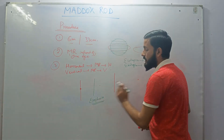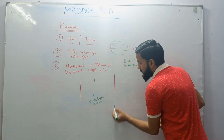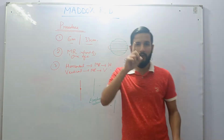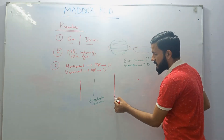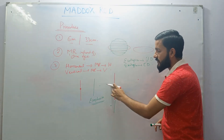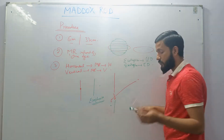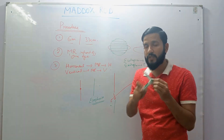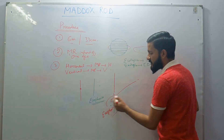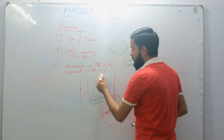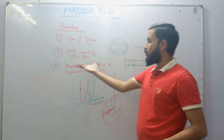If the patient says he sees the dot on the right side and the line on the left side, the images are shifted — the line which was supposed to be on the right is seen on the left, and the dot which was on the left is seen on the right. This is crossed diplopia, which means exophoria. So: the patient's description of a centered line and dot indicates orthophoria; uncrossed diplopia indicates esophoria; and crossed diplopia indicates exophoria.